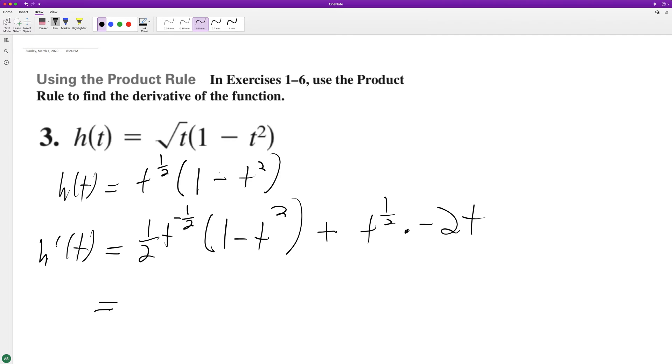So we're going to end up with 1 half t raised to negative 1 half minus 1 half t raised to the 3 halves, plus - it's actually going to be a minus - minus 2 t raised to the 3 halves.